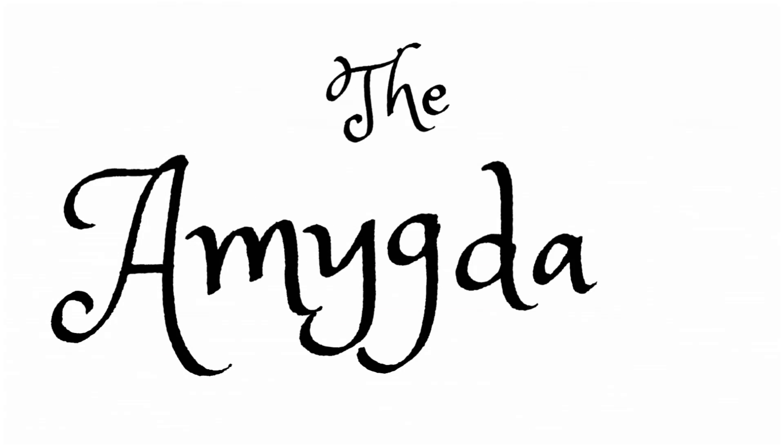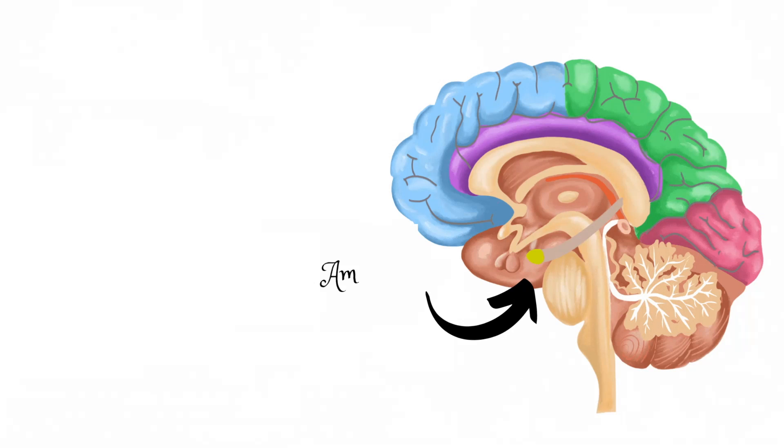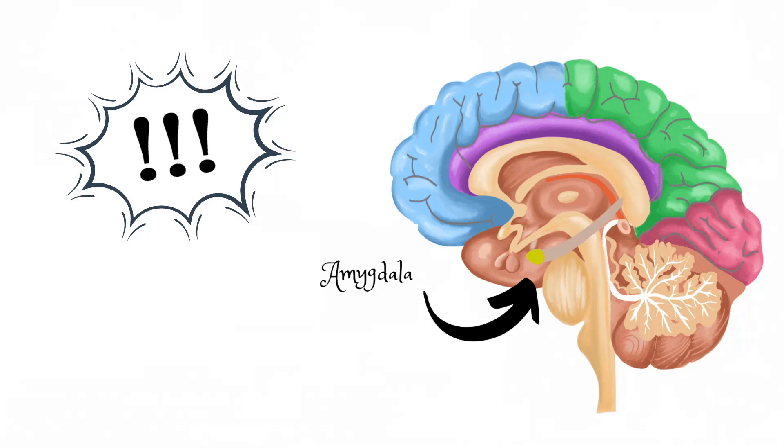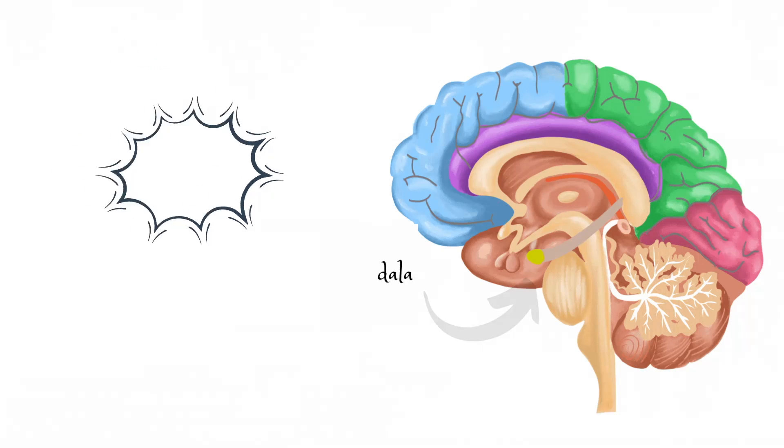The amygdala also plays an important role in anxiety. This tiny almond-shaped mass in your brain automatically responds to cues in your environment. In fact, the amygdala can produce a response and send you into an anxious episode before you even consciously realize it's happening.